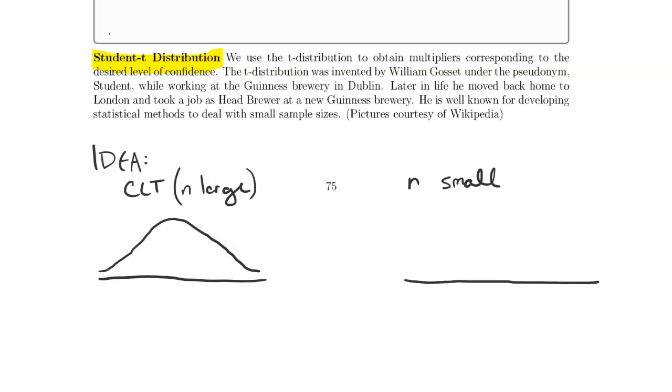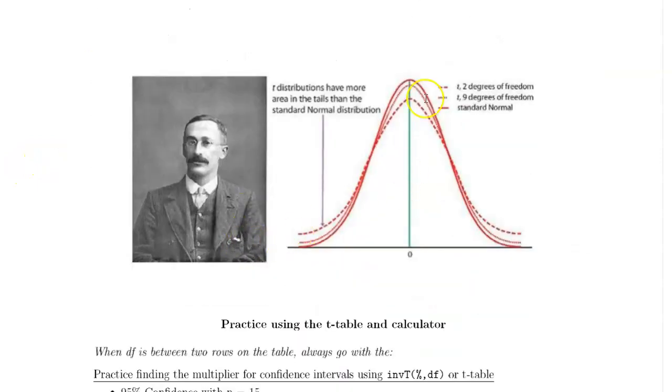But if n is small, what that means is we're going to have more error. Instead of most of our area being concentrated in the middle, we're going to have some thicker tails if we have a small sample size. Here's a picture with the standard normal. We have t with 9 degrees of freedom and 2 degrees of freedom. Degrees of freedom is a value that is dependent on the sample size. t-distributions have more area in the tails than the standard normal distribution.